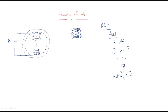The flux is always ejected from the north pole and reconnected at the south pole. Using the right-hand thumb rule, we can identify which face acts as north and which acts as south pole.